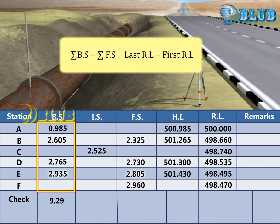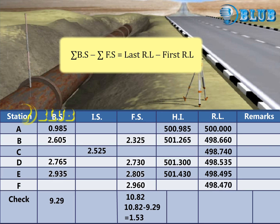The difference between the sum of the backsights and the sum of the foresights should be equal to the difference between the first and last Reduced Levels.